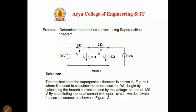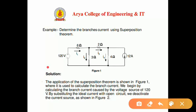Suppose we have an example for the superposition theorem with two sources: a 120-volt voltage source and a 12-ampere current source. We have to find the current in each branch — that is, I1, I2, I3, and I4. The first step is to consider one source at a time. We consider the 120-volt voltage source first, and replace the 12-ampere current source with an open circuit.